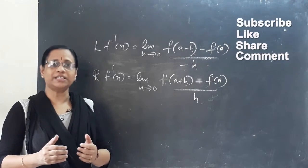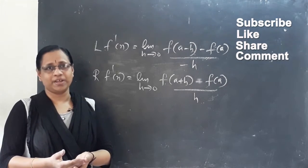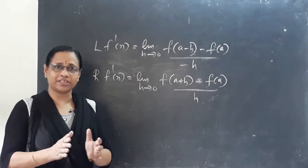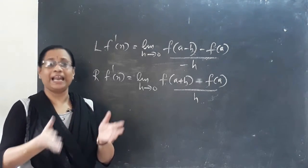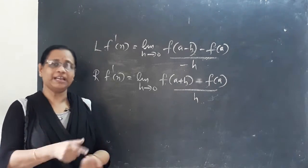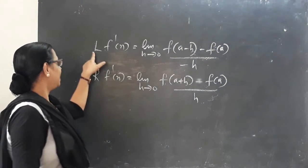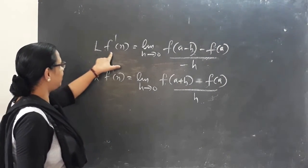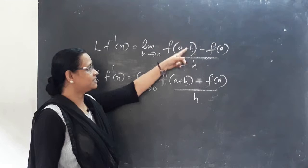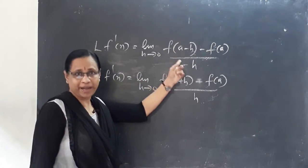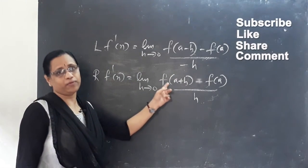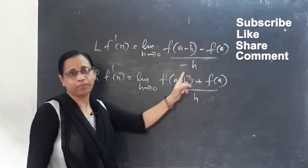Let's check the left-hand derivative and right-hand derivative. The left-hand derivative is LHD, which equals the limit as h tends to 0 of [f(a minus h) minus f(a)] divided by minus h. The right-hand derivative is the limit as h tends to 0 of [f(a plus h) minus f(a)] divided by h.